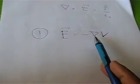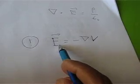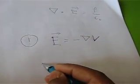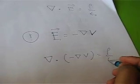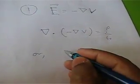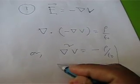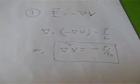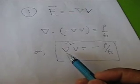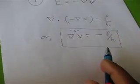The electric field can be expressed as negative gradient of scalar potential, and this is valid for conservative force fields only. If we substitute the value of E, the expression takes the form del dot (minus grad V) equals rho by epsilon naught, or del-squared V equals minus rho by epsilon naught. This is also a differential form of Gauss's law, and this form — expressing potential in terms of charge density — is known as Poisson's equation.